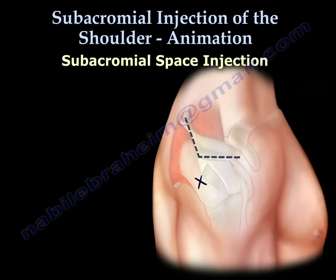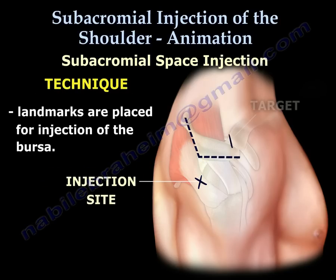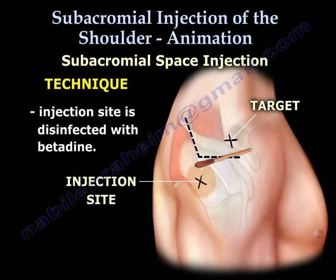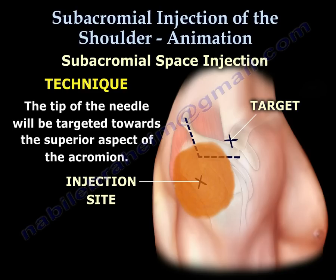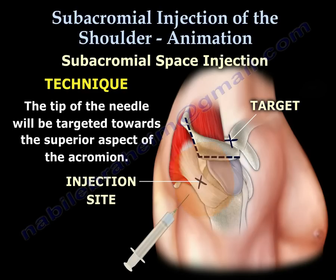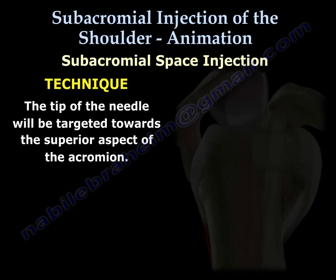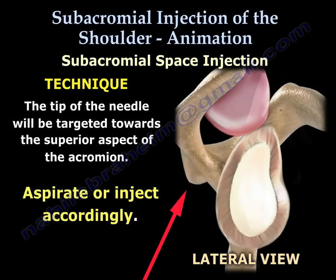Here you can see the landmarks are placed for injection of the subacromial bursa. That is done after a timeout and consent are obtained. The injection site is disinfected with betadine. The tip of the needle will enter the marked site and aim towards the superior aspect of the acromion. The needle will be underneath the acromion. Aspirate or inject accordingly.